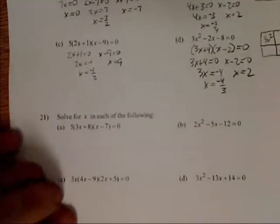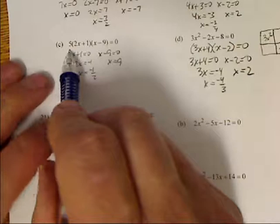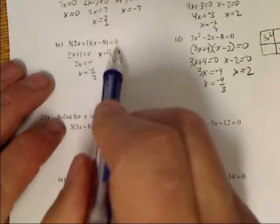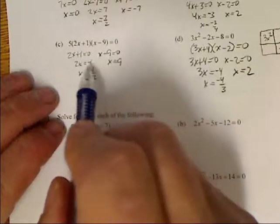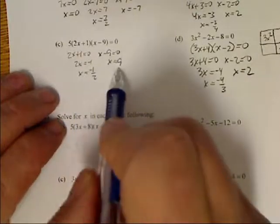Look at part c. Now 5 can't equal 0, so I'm not going to set that equal to 0. So I got 2x plus 1 equals 0, and x minus 9 equals 0. So solving this, I will get x equals negative 1 half, and x equals 9.